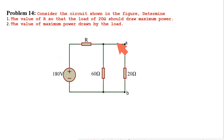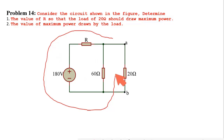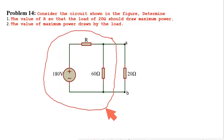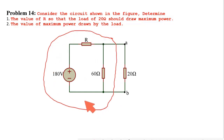Now, what is the source resistance? The source resistance is the equivalent resistance of this part of the circuit. I need to calculate the Thevenin voltage as well as the Thevenin resistance of this part of the circuit, and that Thevenin resistance will be equal to 20 ohm according to the maximum power transfer theorem.